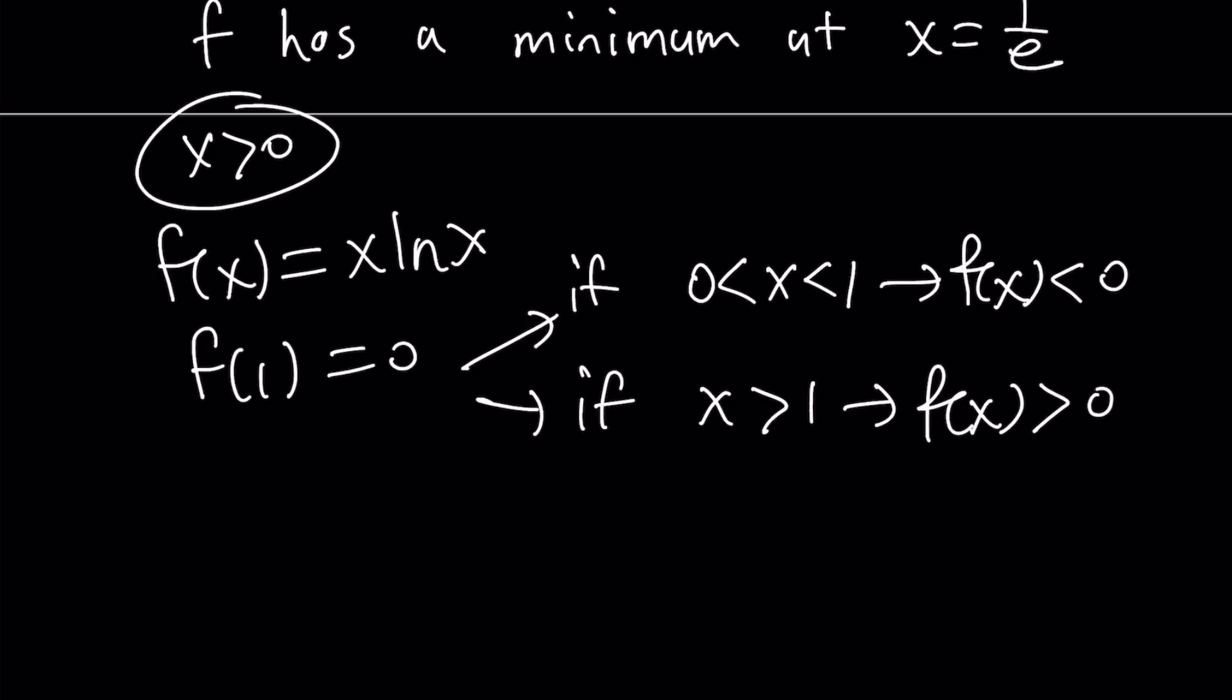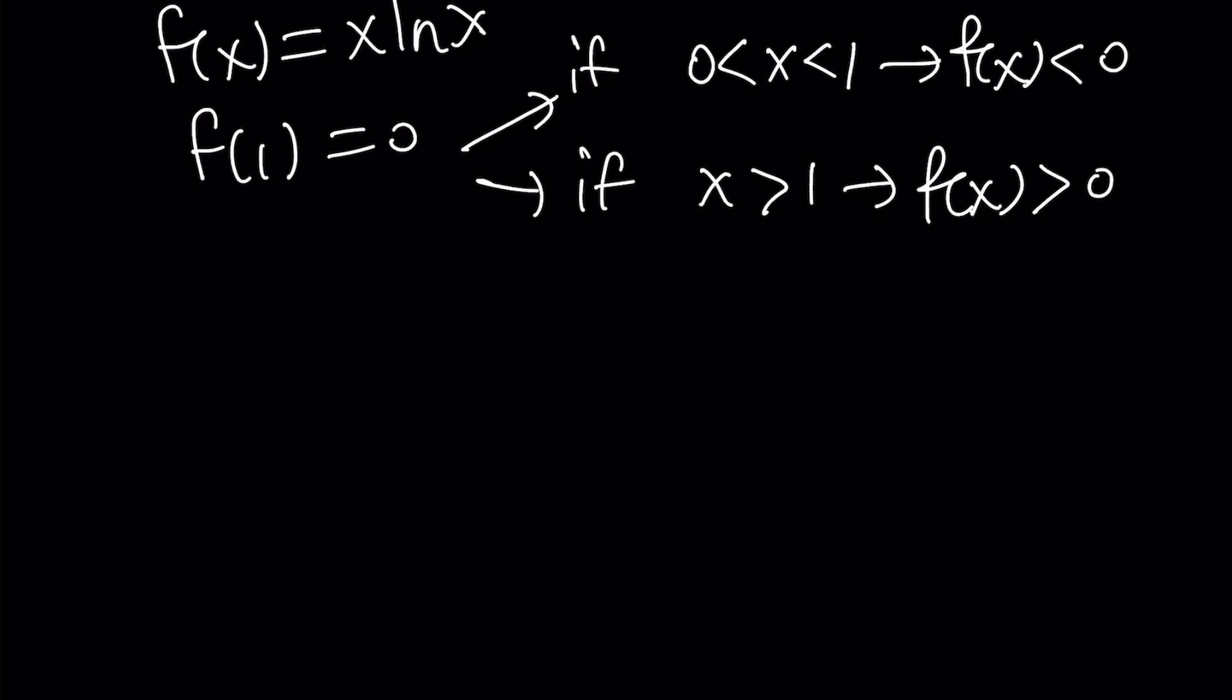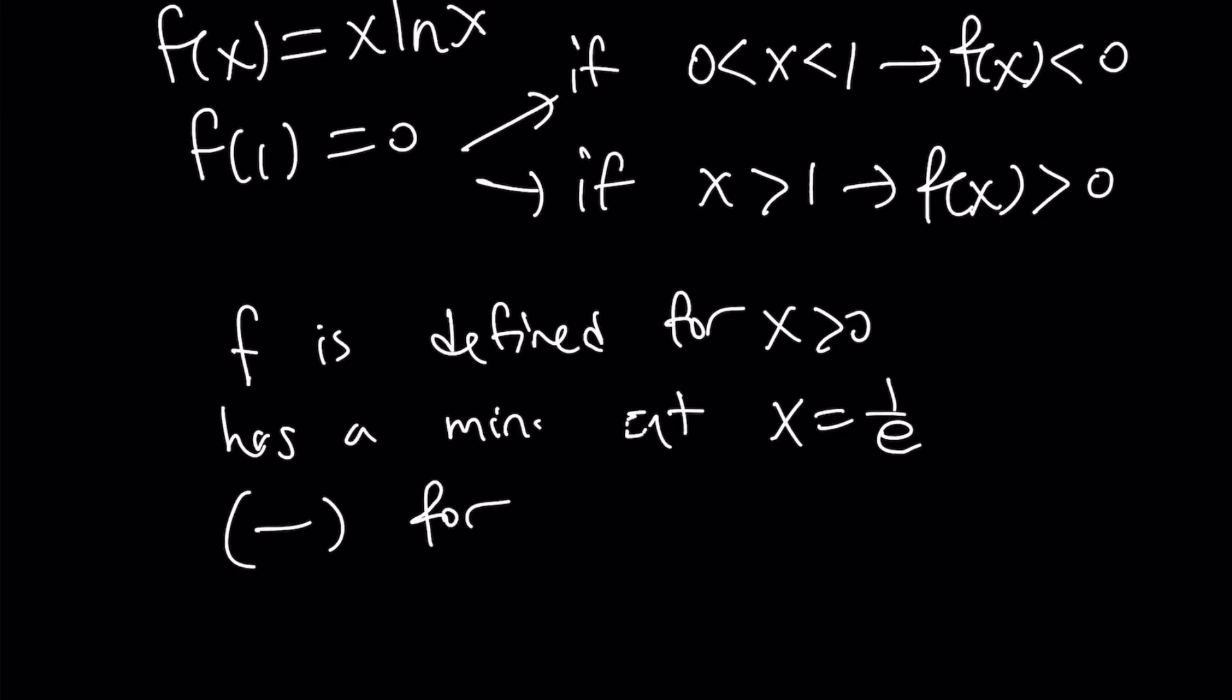Great! So now let's go ahead and summarize what we know, and then I'm going to show you the graph of this function. Quickly, let's summarize what we have. f is defined for positive x values. It has a minimum at x equals 1 over e. And then it's negative for x between 0 and 1, and positive for x greater than 1. But all these facts are about f, not its derivative.